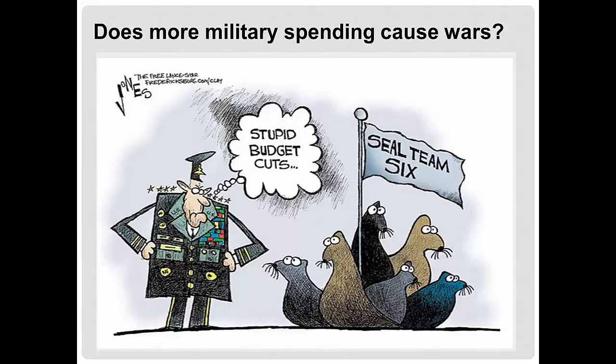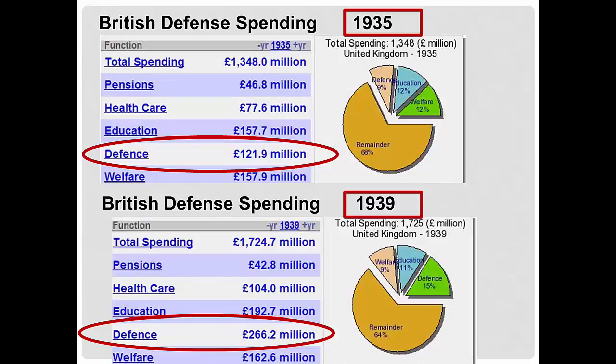Let's apply our three tests. Which is the cause and which is the effect? Higher budgets came before the war, which suggests military spending was the cause. Is there a reasonable connection? It's not implausible that militaries, at least in some countries, are looking for opportunities to use the new weapons they've paid big money for — boys and their toys. But are there other possible explanations? Could higher military spending have an earlier cause? Could we be confusing cause and effect? These two charts show that British military spending more than doubled between 1935 and 1939. So does the cause-effect relationship make sense? Did higher military spending cause England to go to war with Nazi Germany in 1939?